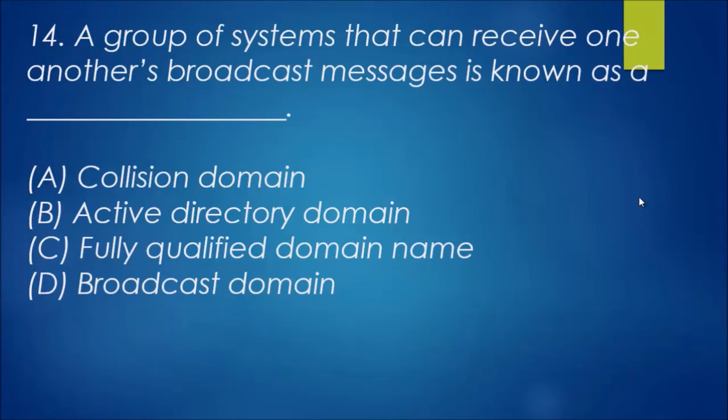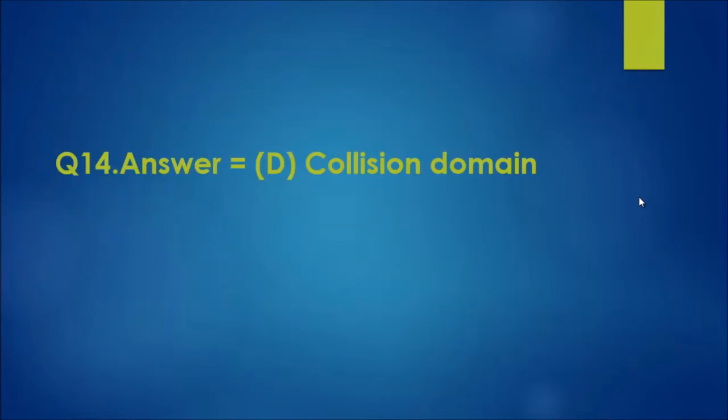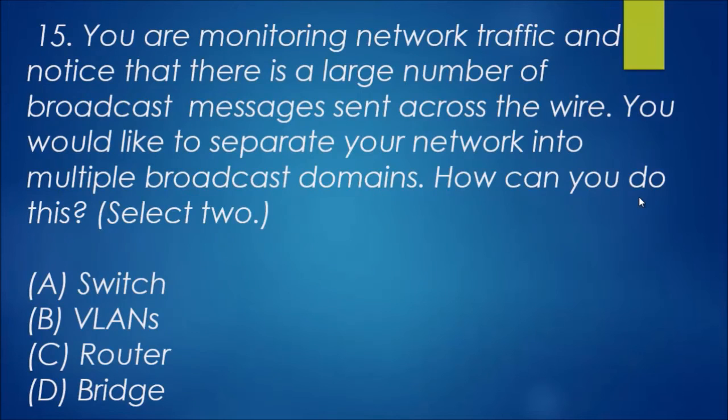A group of systems that can receive one another's broadcast messages is known as a blank. B and C look ridiculous, so that leaves us with A and D. The answer here is actually D, the broadcast domain. A broadcast domain is a group of systems that can receive those broadcast messages. By using VLANs you can break up the network into multiple broadcast domains, and hence the answer is D.